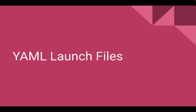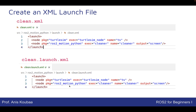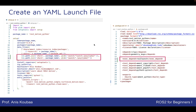Now let's look at the second format: YAML launch files. It's basically the same structure but written in YAML. The file can be named clean.launch.yaml or clean.yaml. We start the launch file defining two nodes with YAML's well-specified indentation. The first node has package turtlesim, executable turtlesim_node, name sim, and namespace turtlesim1. The second node is ros2_motion_python with executable cleaner, name cleaner, and output screen. Both naming conventions — filename.launch.yaml and filename.yaml — are possible, and make sure to have an execution dependency as explained.